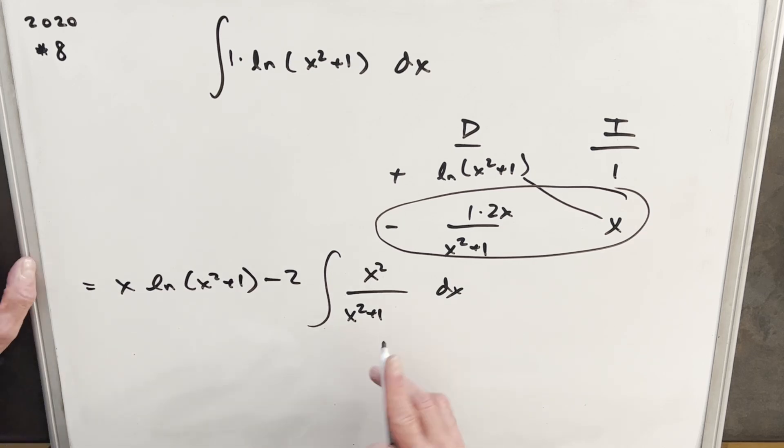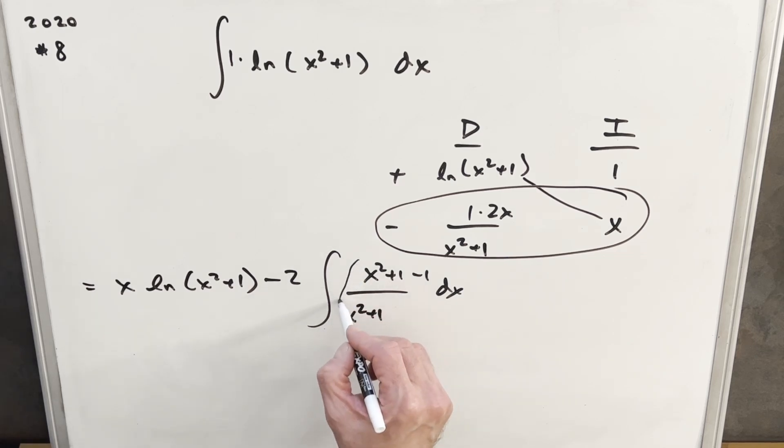The way I like to deal with this thing over here is, let's just add a one and subtract a one. The reason I do that is because this piece right here is just going to be one. We split it into two integrals, but the other part is going to be an easy integral too. So let's just rewrite this and see what we have.